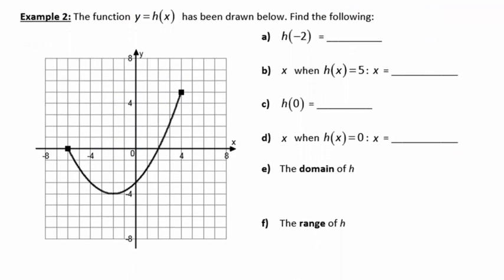Let's look at the next page. In example 2, the function y equals h of x has been drawn. Find the following. In part a, I'm looking for h of negative 2. Remembering that x values are inside the parenthesis, this negative 2 they're telling me is an x value. So what I want to do is find out where that hits the function. It's going to be equal to the y value or the h of x value of negative 4.